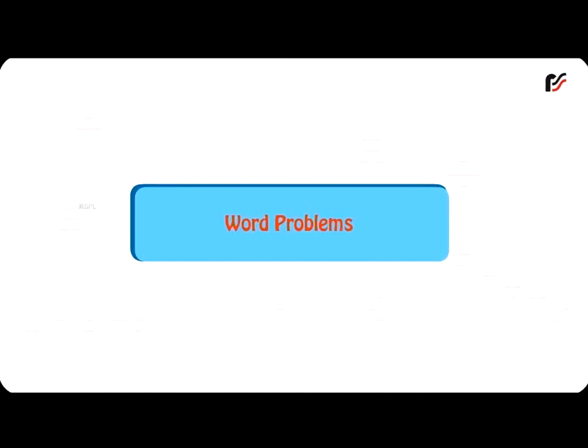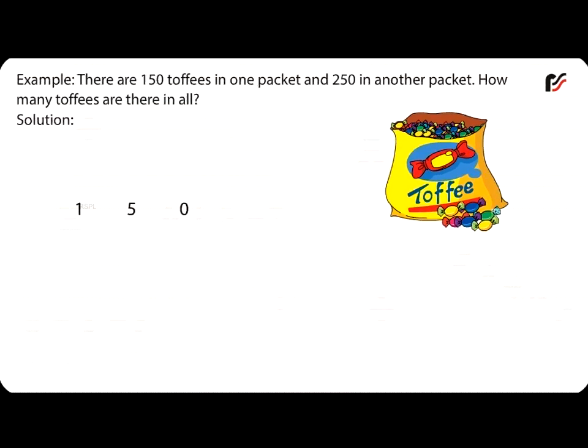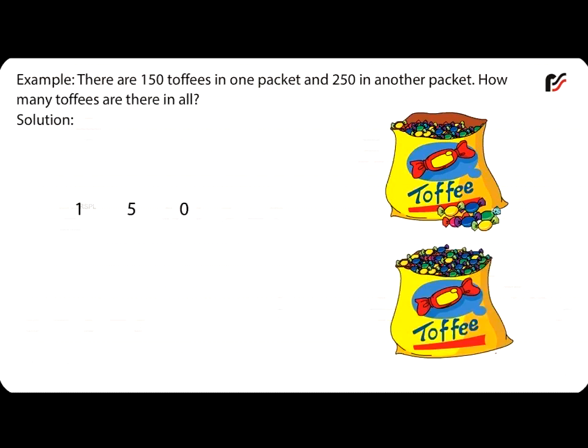Word problems. Example: There are 150 toffees in one packet and 250 in another packet. How many toffees are there in all? Toffees in first packet is equal to 150. Toffees in another packet is equal to plus 250. Total toffees is equal to 400.